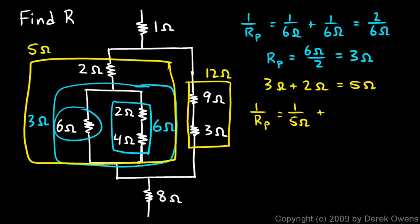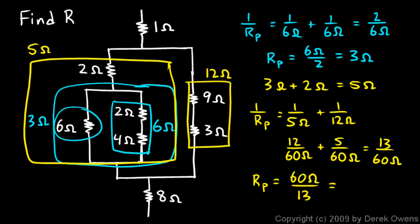Now let's see, what would a common denominator be for 5 and 12? I guess it'd be 60. So 1 over 5 ohms is the same thing as 12 over 60 ohms, and 1 over 12 ohms is the same as 5 over 60 ohms. So that comes out to 13 over 60 ohms. So Rp is 60 ohms over 13, and I need the calculator for that. 60 divided by 13 comes out to 4.6, or pretty close to 4.6. Okay, what I've just calculated is the resistance of